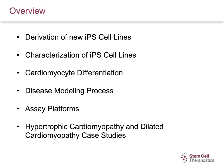As an overview, I will touch upon the processes of derivation of new induced pluripotent stem cell lines, also known as iPSC lines, characterization of these lines, and their differentiation into cardiomyocytes. I will also focus on disease modeling process and assay platforms by using two case studies: hypertrophic cardiomyopathy, commonly known as HCM, and dilated cardiomyopathy, commonly known as DCM.